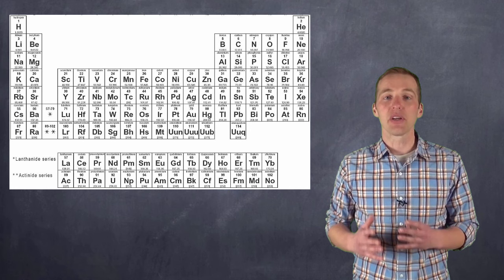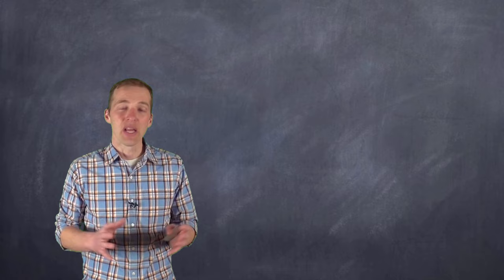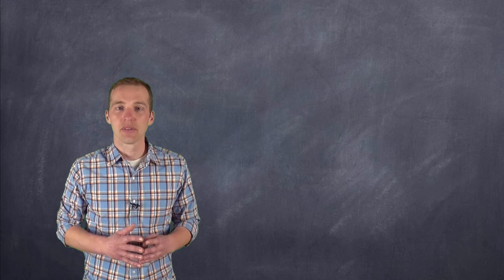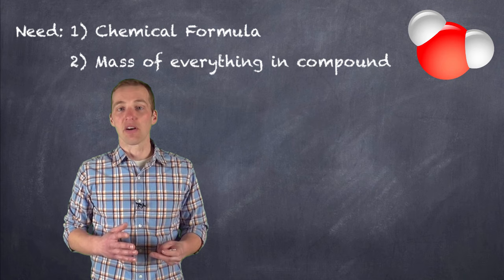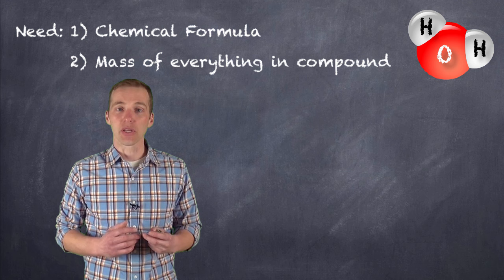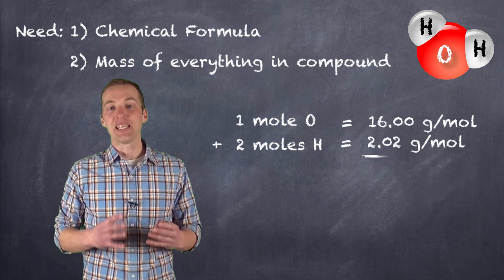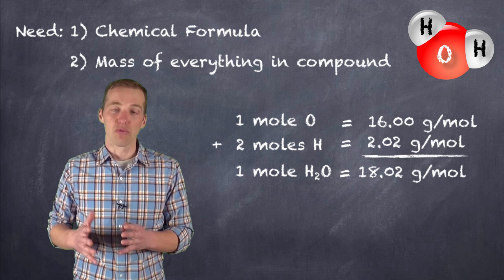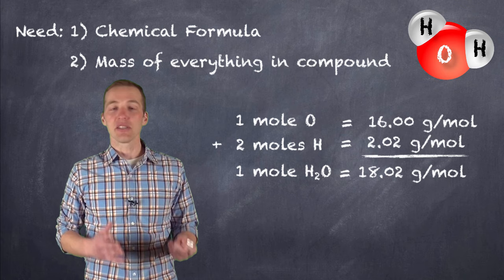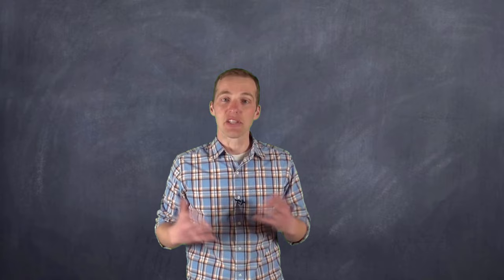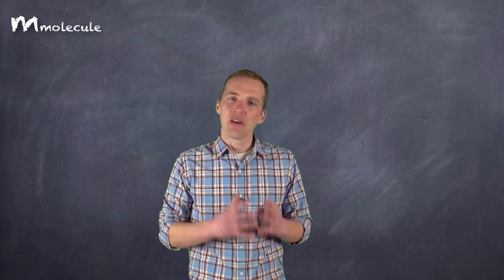We can look at any element on the periodic table and establish its molar mass from that number. We can also figure out the molar mass of a compound by adding the individual molar masses of all elements in it. For water, there are two hydrogens and one oxygen, so we take oxygen's molar mass of 16.00 g/mol and add it to two hydrogens' contribution, giving us 18.02 grams per mole. So one mole of water weighs 18.02 grams. If we have the mass of a molecule and use its molar mass, we can figure out the number of moles of that molecule.